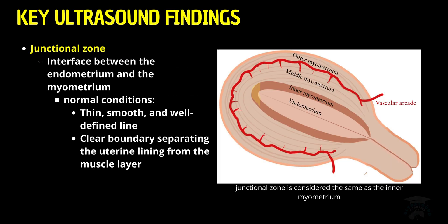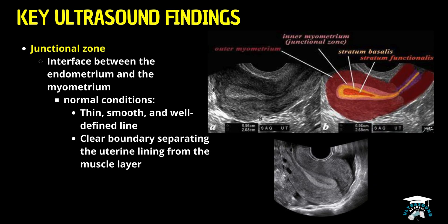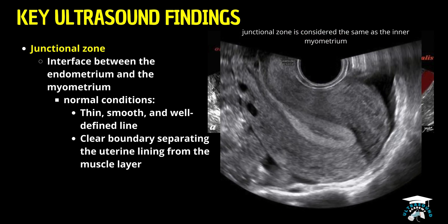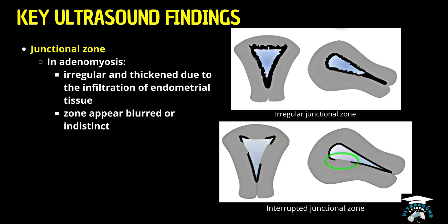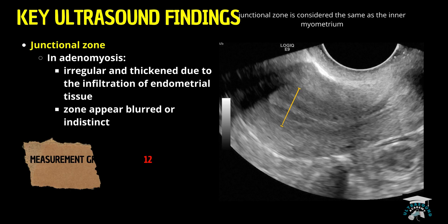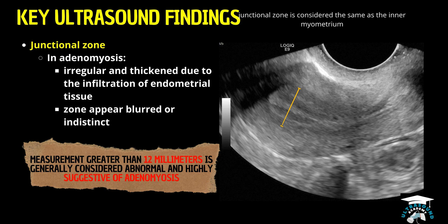Finally, let's focus on the junctional zone, the critical interface between the endometrium and the myometrium. Under normal conditions, this zone appears as a thin, smooth, and well-defined line on ultrasound imaging — a clear boundary separating the uterine lining from the muscle layer. However, in adenomyosis, the junctional zone becomes irregular and thickened due to the infiltration of endometrial tissue into the myometrium. This infiltration disrupts its smooth continuity, making the zone appear blurred or indistinct. A measurement greater than 12 millimeters is generally considered abnormal and highly suggestive of adenomyosis — a significant diagnostic clue.